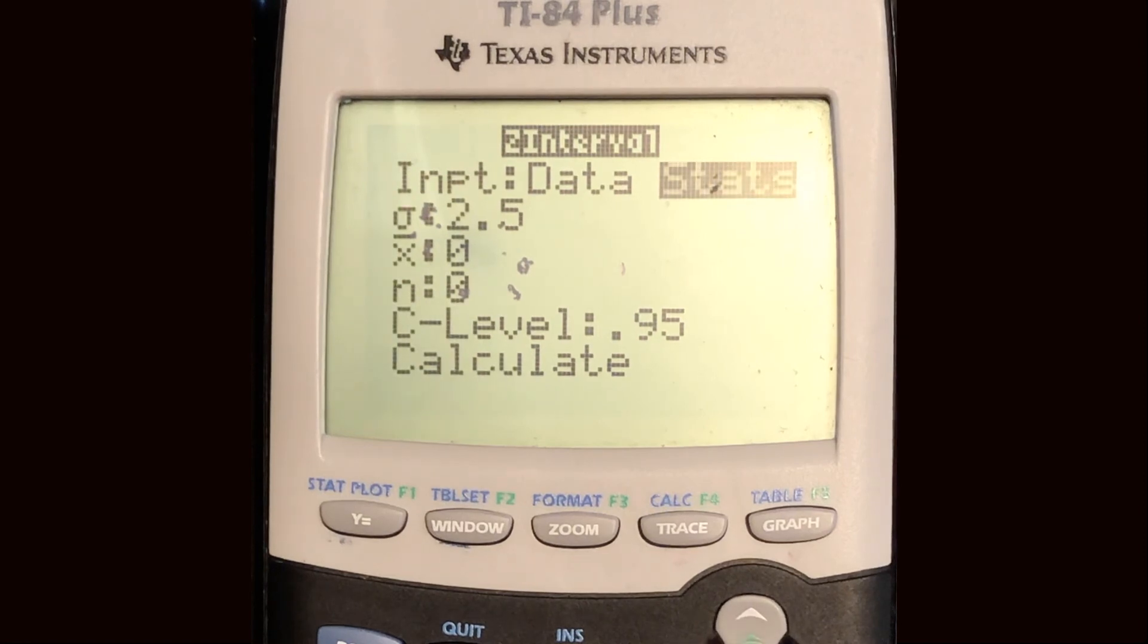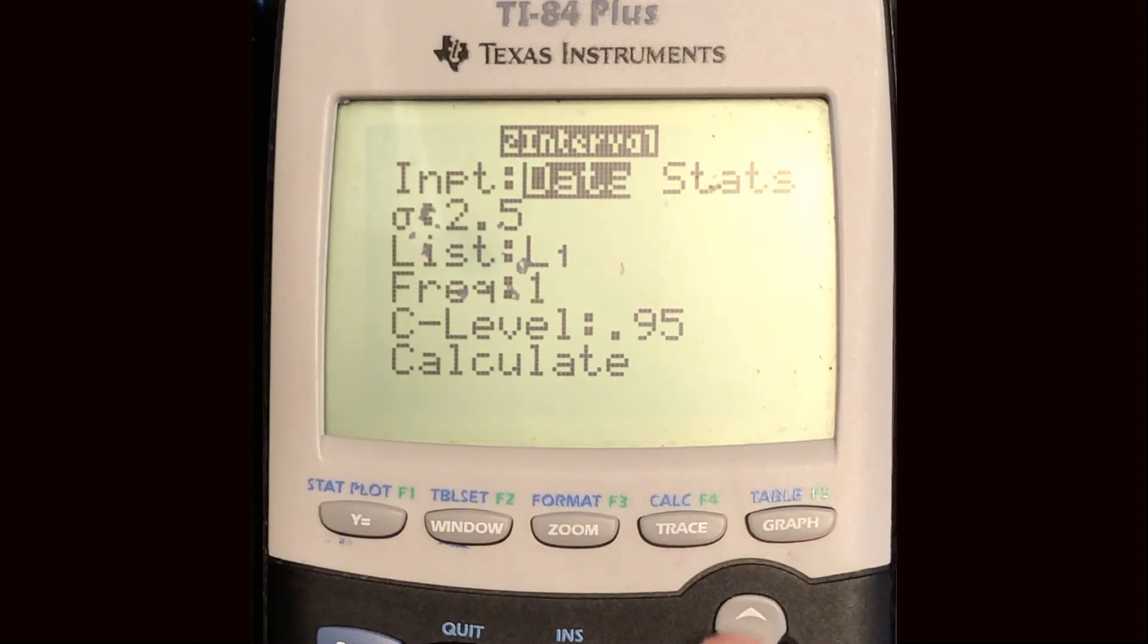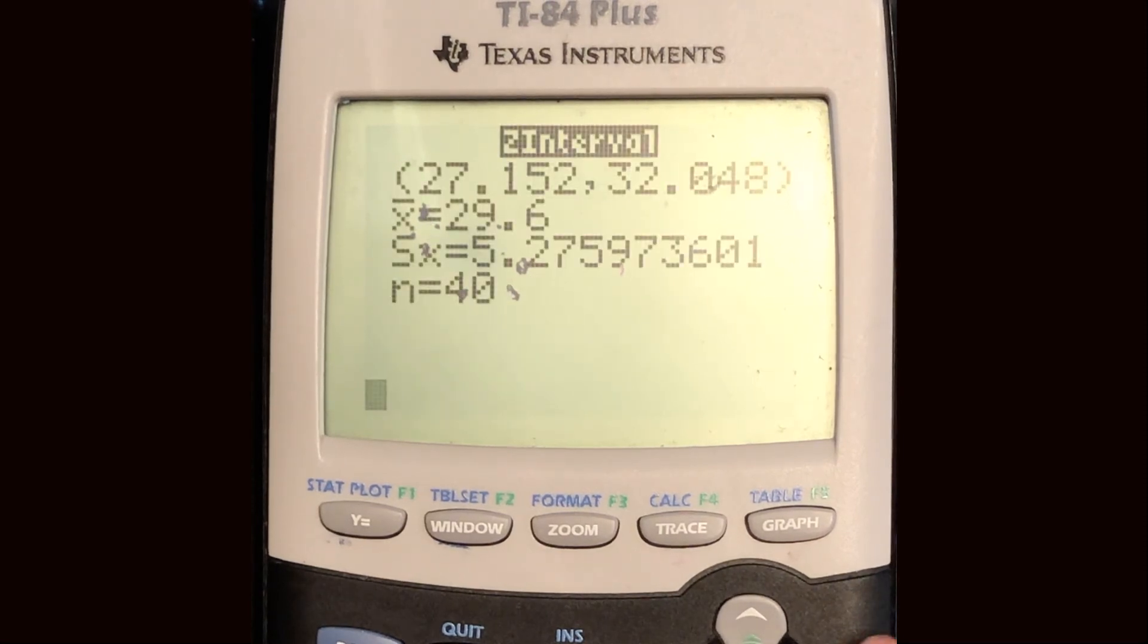Press enter and then here you have an option between data and stats. So if you don't know the mean and you just had the large data set, you can actually just tell it to go use the data, use the list. We didn't have a frequency so just list one. We'll just put the number one there and we had a population standard deviation of 7.9 and we had a confidence level of 0.95. So we'll calculate and there you go.